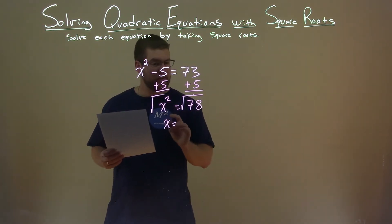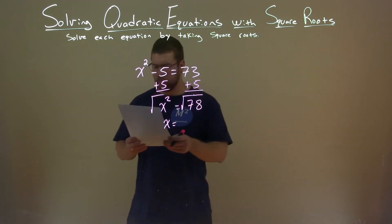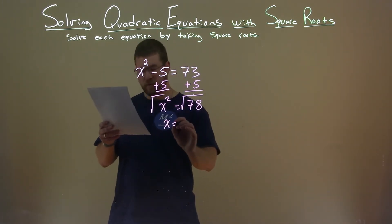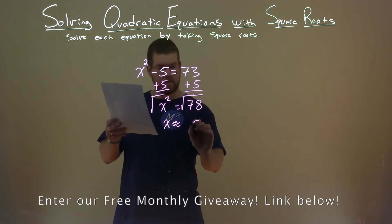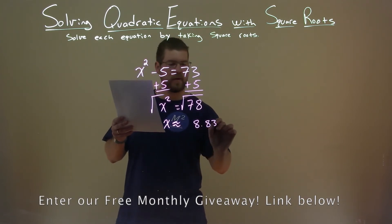That leaves us with x by itself, and the square root of 78, well, the square root of 78 comes out to be approximately, what is that, 8.832.